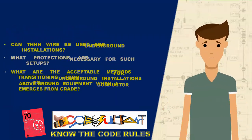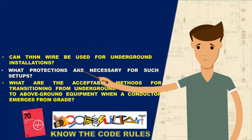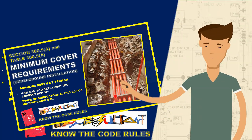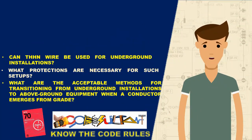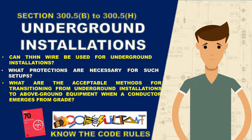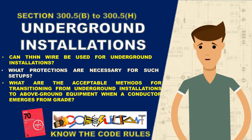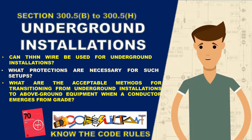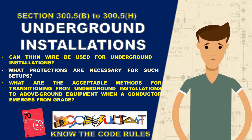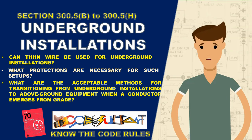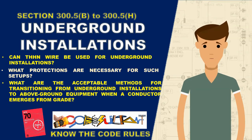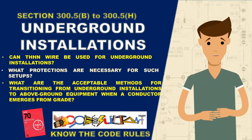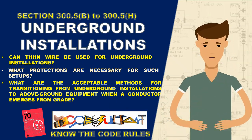Hello everyone. In our last video, we covered the minimum cover requirements for burying underground wiring. Today, we'll dig deeper into section 300.5. In this discussion, we'll explore the types of wiring permitted by the code and the protective measures necessary to ensure the safety and integrity of underground installations. Without further ado, let's start digging these underground installation protection rules.